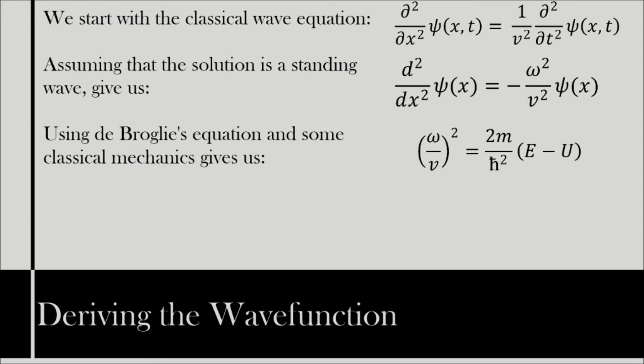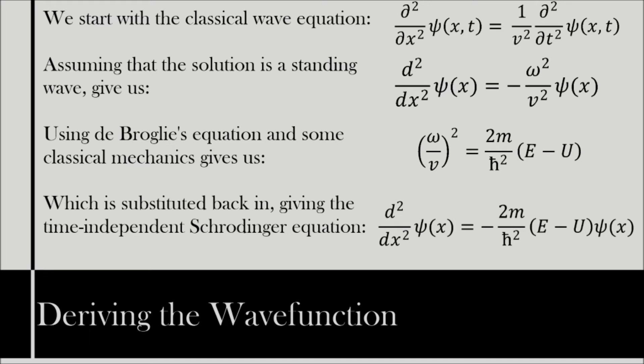Noting that (ω/v)² equals ω²/v², we can simply substitute this into the classical wave equation to obtain the time independent Schrödinger equation,